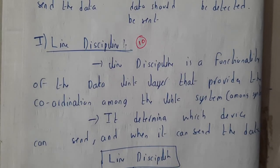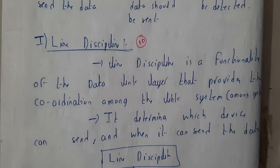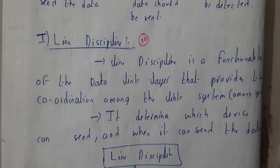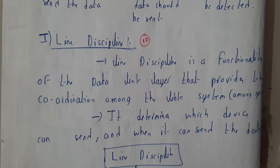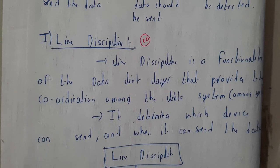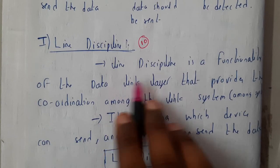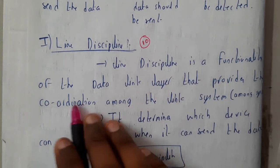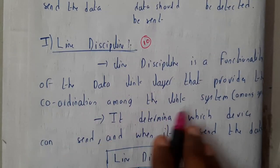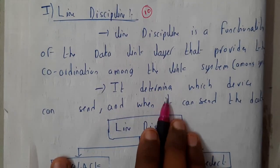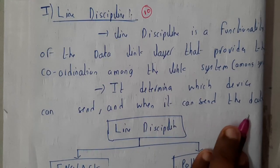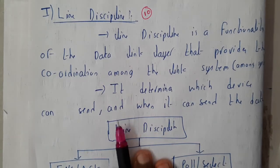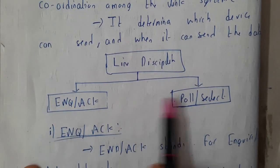Hello guys, we are back with our next tutorial. In this tutorial let us go through line discipline. Line discipline is a functionality of the data link layer that provides coordination among the linked systems. It determines which device can send the data or which device can receive the data — all these things will be judged by the line discipline.